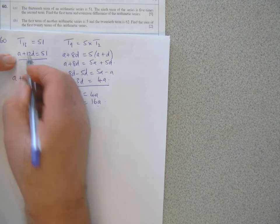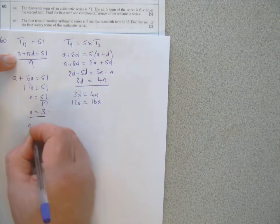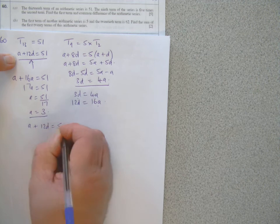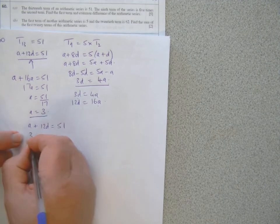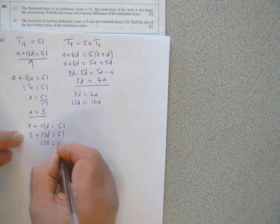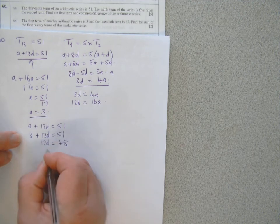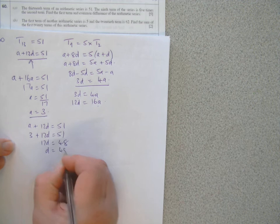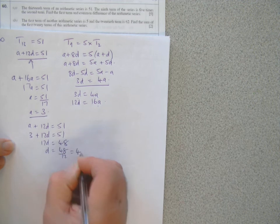So A is 3, so back into this equation, A plus 12D equals 51. A is 3, so 3 plus 12D equals 51. Take 3 over, 48, and then 48 shared by 12 is 4.